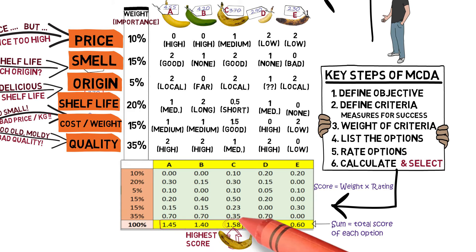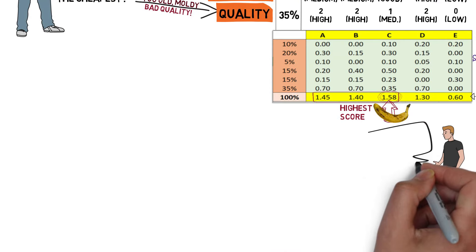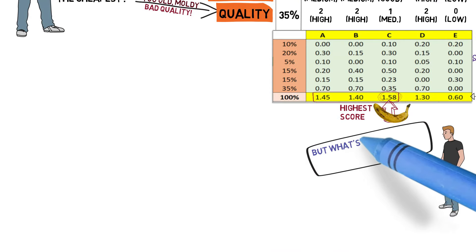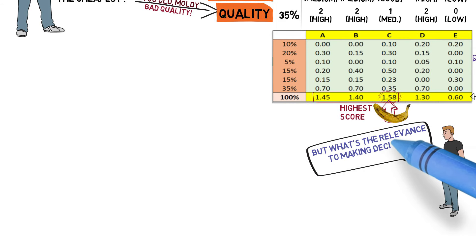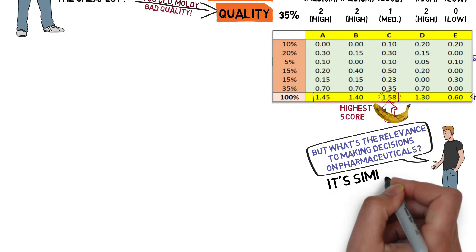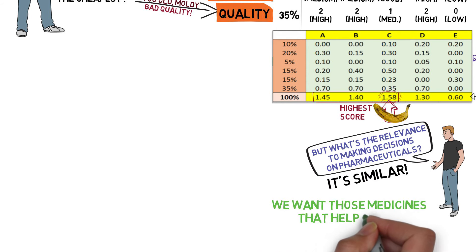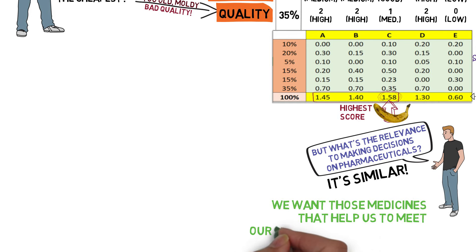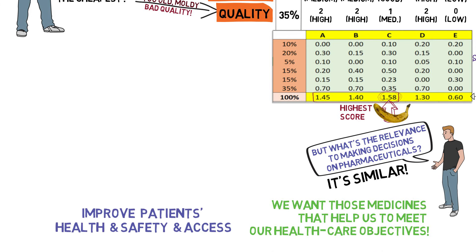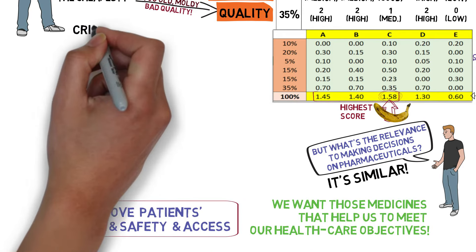You could also decide to buy a mix of the two or three best performers. Now, you may wonder what that means for making decisions on medicines. Well, there's a lot of similarity in the decision process. You want those medicines helping you to achieve your healthcare objectives, which may be to improve the health of your population and to ensure safety of and access to therapies.